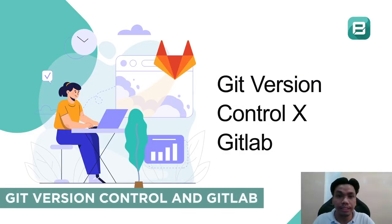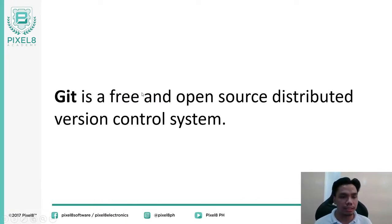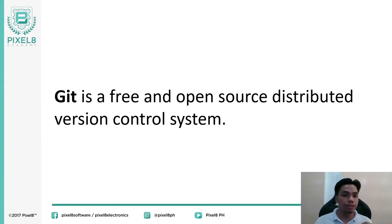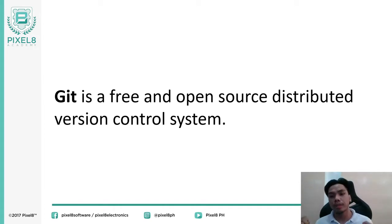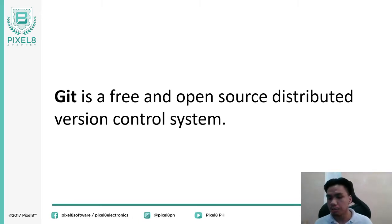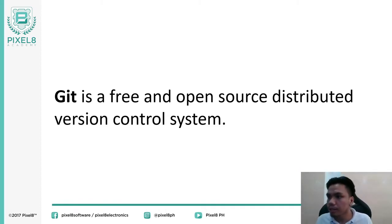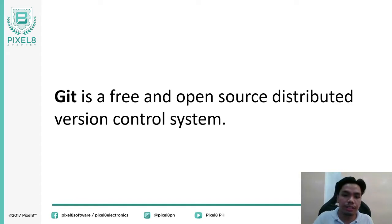For the first topic we have Git version control and GitLab. You might ask: what is Git? For those of you who are not aware, Git is a free and open source distributed version control system. A version control system is a way of handling file versioning based on your changes. For example, you have a single file, you modify it, and you want to save that specific instance without losing the previous one.